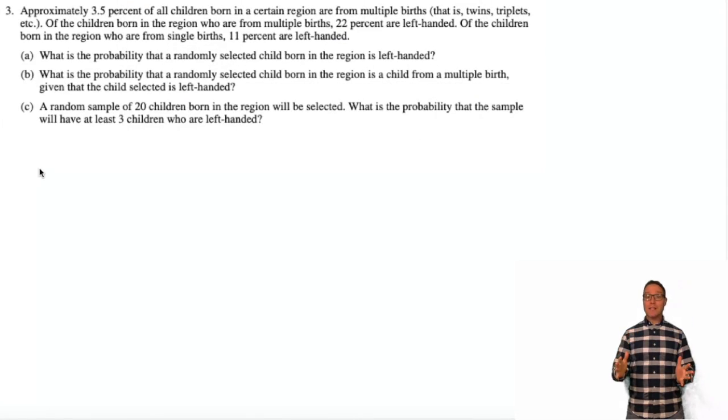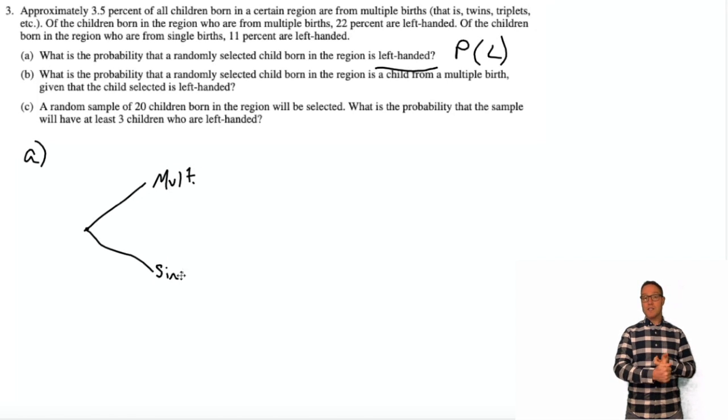Okay, this is a probability question. Those are really scary to most people, but you don't have to be afraid. You can feel the fear and then do it anyway. Part A wants us to know what's the probability that a randomly selected child in this region is left-handed. Now, if you read the question, they give you two events. 3% of the children born in the certain region are from multiple births, or they could be single birth. That's the first event, and the probability is different for each event.